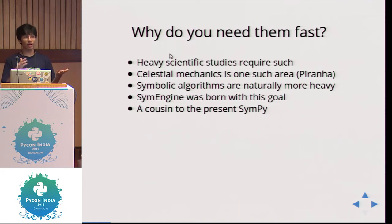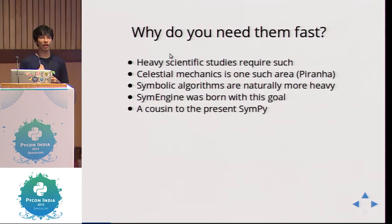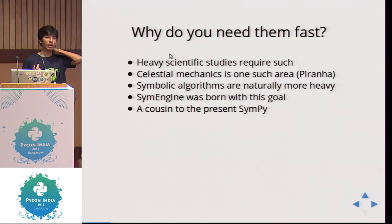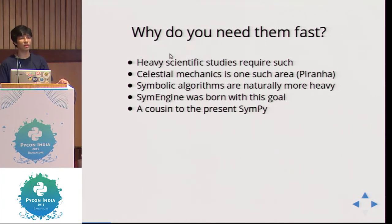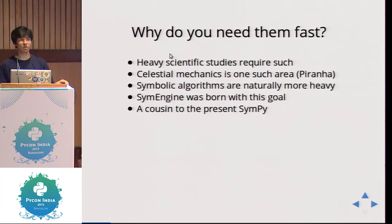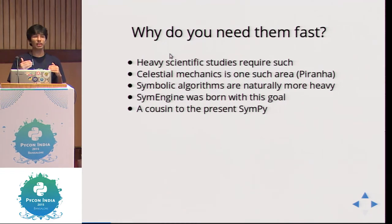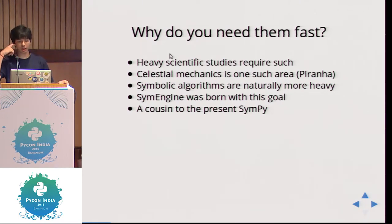Once you have a symbolic library, you need it fast. Why fast? Once you are doing heavy scientific computation, symbolic algorithms are naturally heavier. You can intuitively guess why — you have to manipulate expressions, and you will have multiple heuristics in your code. Say you have to calculate an integral — you basically try out different methods until you find one where you can solve it. That's how a symbolic algorithm goes about. Symbolic algorithms are naturally more heavy, and heavy computation requires fast algorithms.